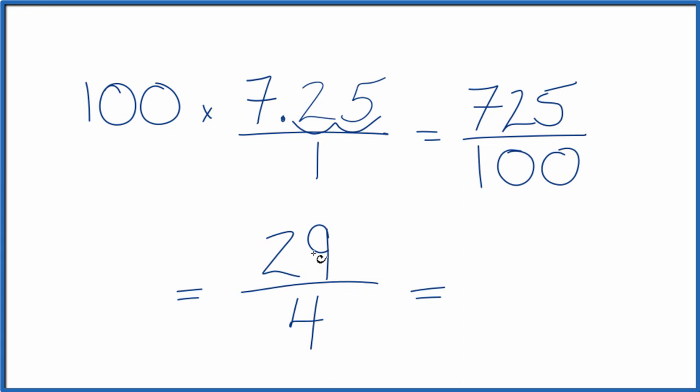4 goes into 29 seven times. 7 times 4 is 28 with 1 left over. Bring the 4 across. And 29 fourths is also equal to the mixed fraction 7 and 1 fourth.